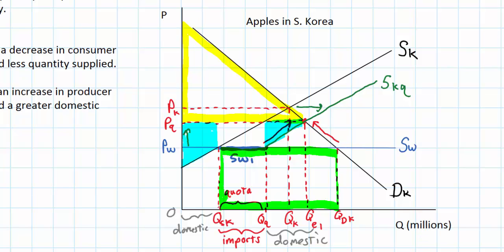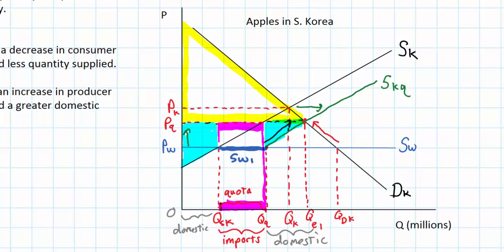Following the imposition of the quota, the quantity of imports is severely limited but the price rises. In purple, I'll outline the area of foreign producer revenue following the quota — it's the quantity of imports from QSK to QQ times the new higher price of PQ. So we have foreign producer revenue equal to the purple rectangle.